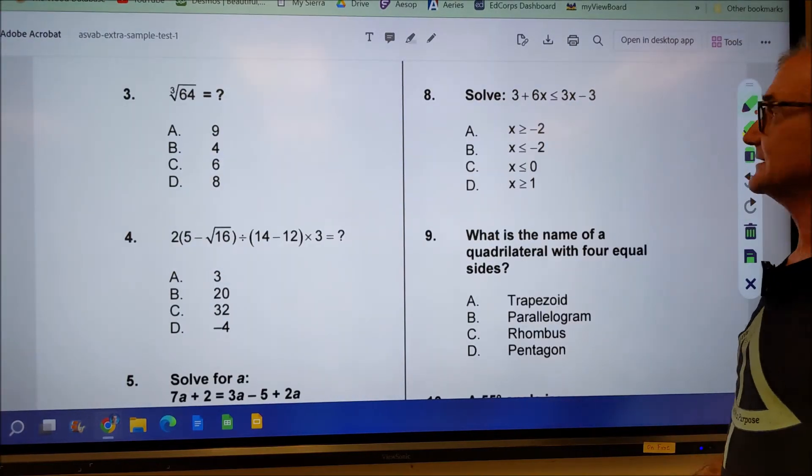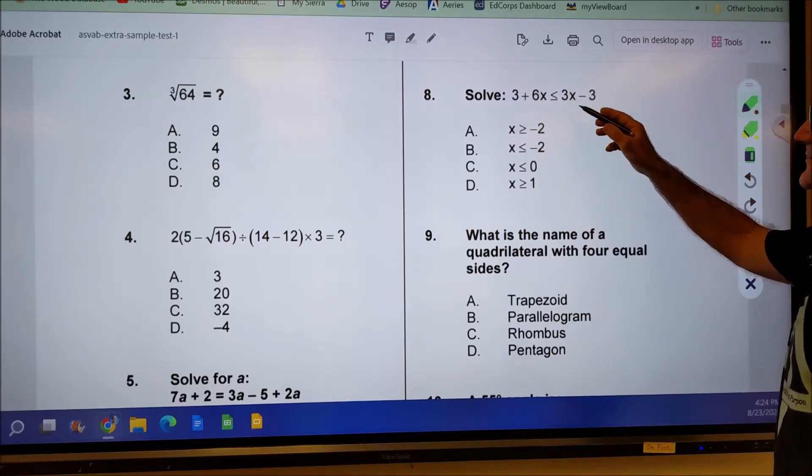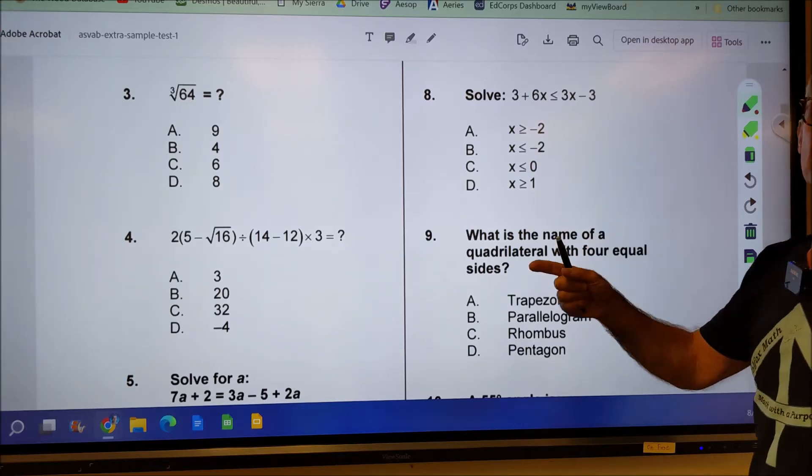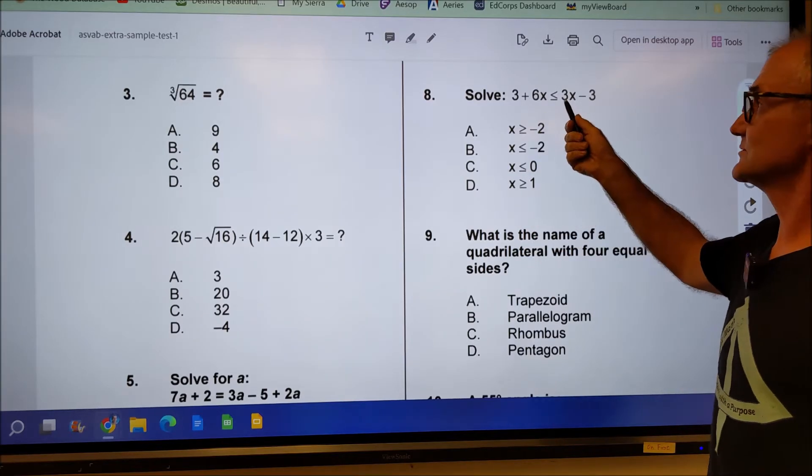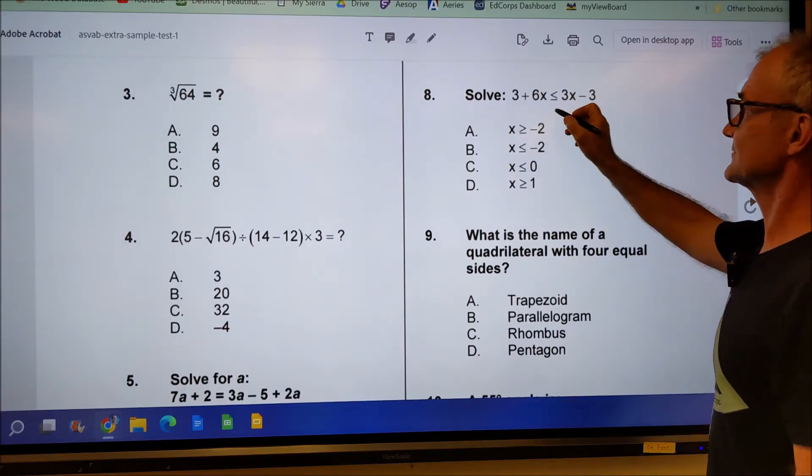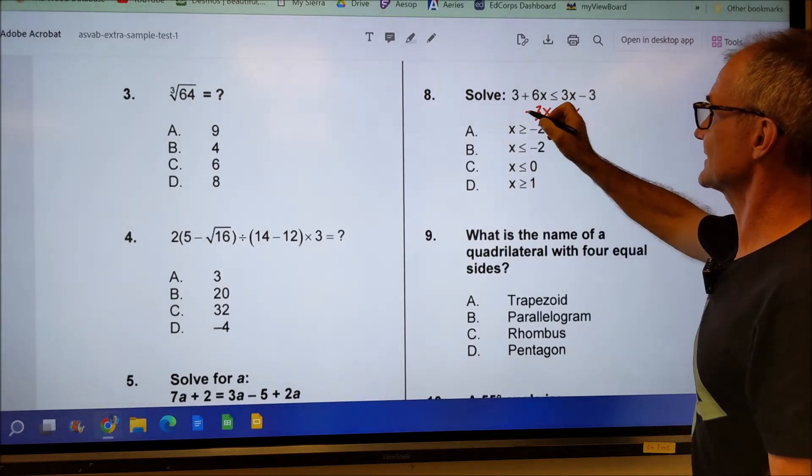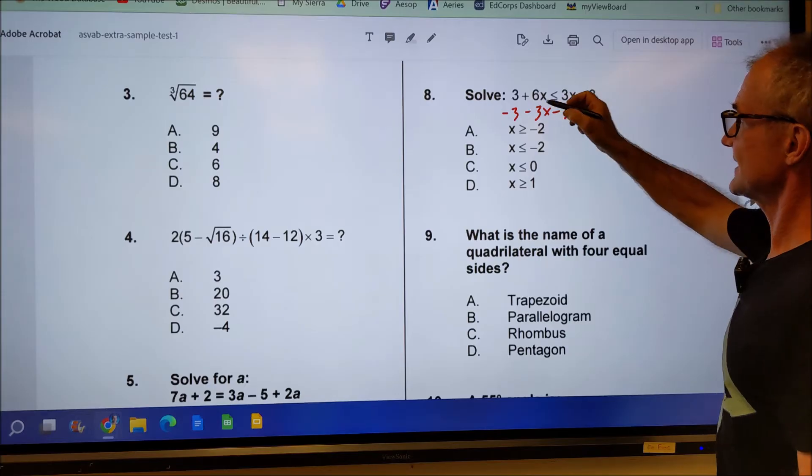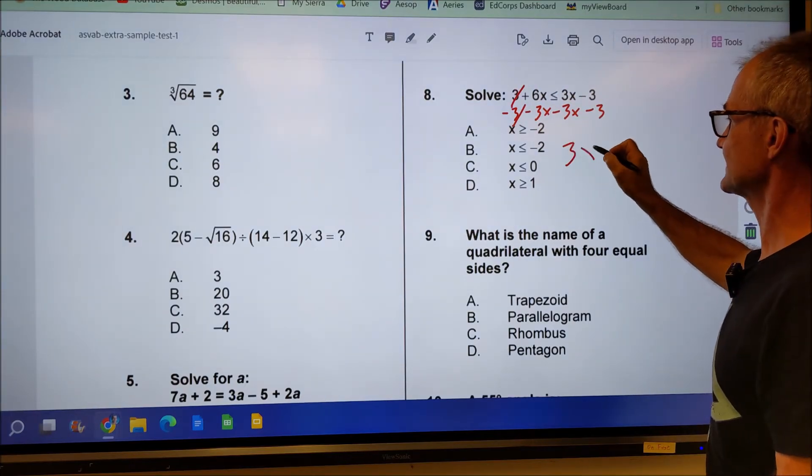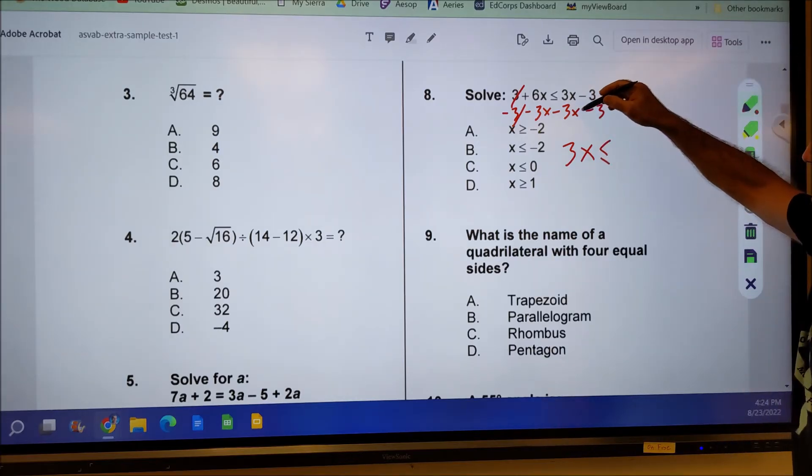Number eight is an inequality, meaning it's not an equal sign. It's less than or equal to, and I need to solve that, meaning get X by itself. The key rule on this is when you multiply or divide by a negative, you switch the sign. But I'm not going to end up doing that here. I'm going to subtract 3X from both sides. I'm also going to subtract three from both sides. That and that'll cancel. 6X minus 3X is 3X.